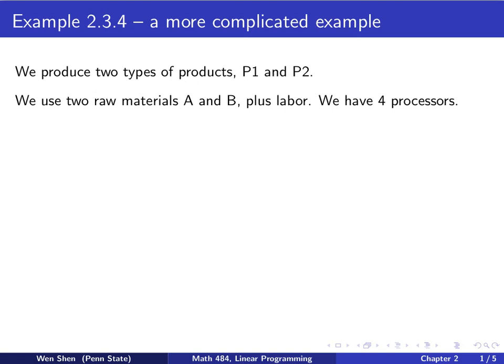It involves somewhat more complicated settings. So it's also a production model. We are producing two types of products, we call them P1 and P2. We will use two types of raw material, A and B, plus labor. And in the factory, we have four processors, each one has different capacities.